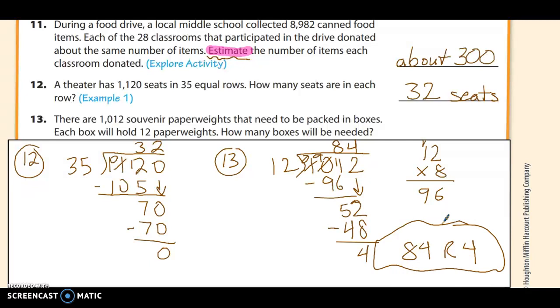Whenever you get a remainder, you have to make sense of it. It says how many boxes will be needed. Well, 84 is the number of boxes that are needed, but the remainder means we have leftover paperweights. So 84 boxes won't be enough. You're going to need at least 85 boxes. 84 boxes will be full, and then the remaining paperweights need to go into an 85th box. So you need 85 boxes. Whenever you have a word problem in division, and it's talking about how much you're going to need, you're going to have to round up. Good job. You're done with page 110. You can move on to page 111.